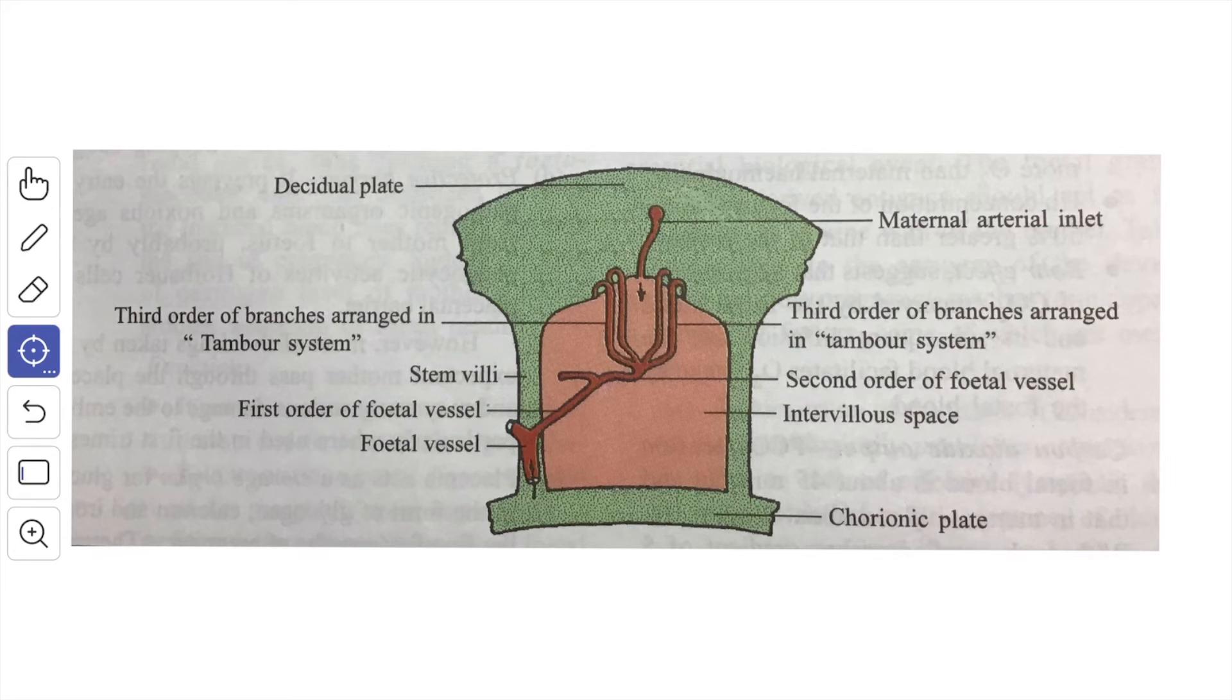The spiral branches of the uterine arteries open into the intervillus space by piercing the basal plate at numerous sites. About 200 spiral arteries pierce the basal plates at random sites. The mouth of the terminal arteries are lined by hypertrophied endothelial cells which may be replaced by the migration of the cytotrophoblastic cells. These cells probably exert a damping effect on the placental circulation by reducing the arterial blood pressure.